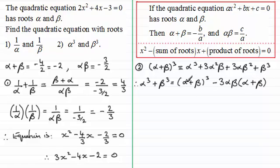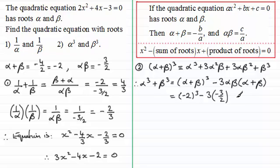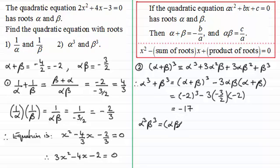We know both alpha plus beta and alpha beta. Substituting in: alpha plus beta is minus 2, so we have minus 2 all cubed, then minus 3 times alpha beta which is minus 3 over 2, times alpha plus beta which is minus 2. Working this out gives minus 17. For the product of the roots, alpha cubed times beta cubed equals alpha beta all cubed, and cubing minus 3 over 2 gives minus 27 over 8.